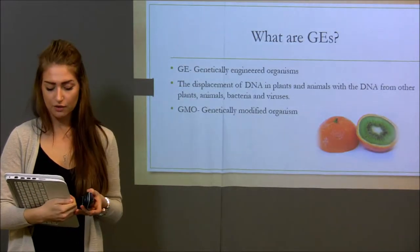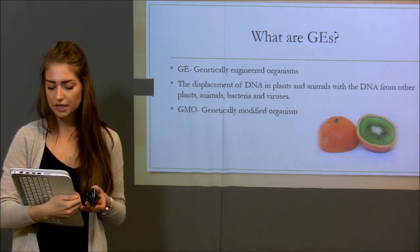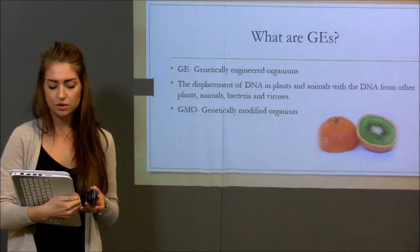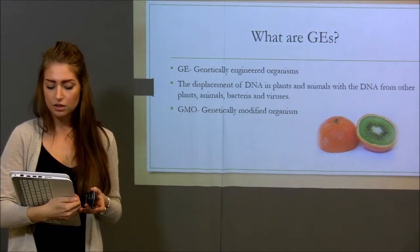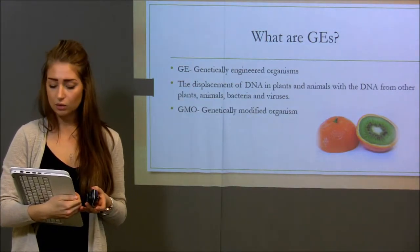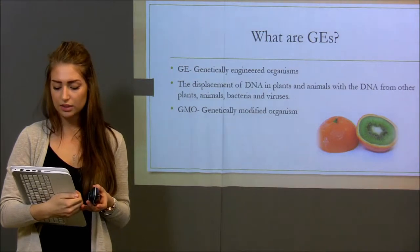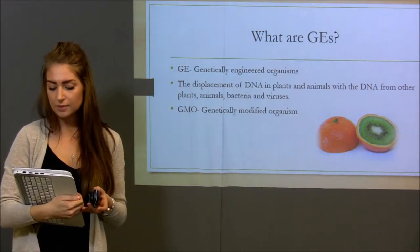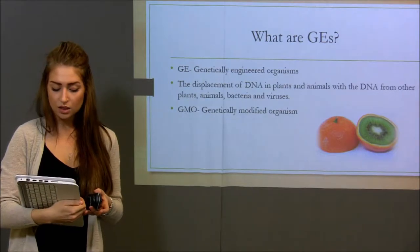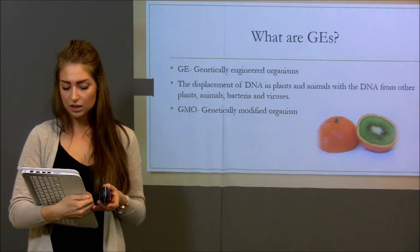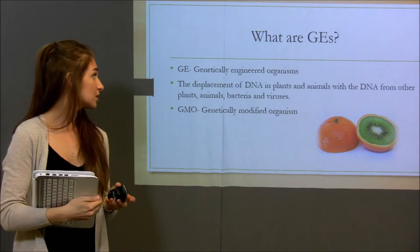First off, genetic engineering is the displacement of DNA between animals or plants with other animals, plants, bacteria, or viruses. There are also GMOs, which are genetically modified organisms. This can happen naturally or through a controlled experiment of selective breeding, exposing different plants or animals to each other. These two are often combined into the term GMO, which is actually incorrect as the two differ substantially.